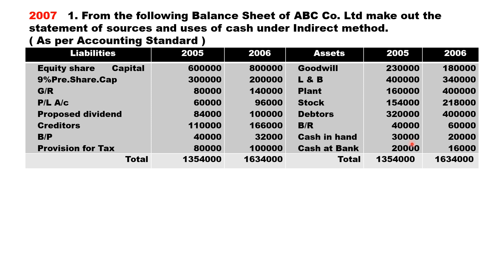Cash and bank will not come into calculations directly — they appear only at the end for finding the final answer. Opening cash and bank together is fifty thousand (thirty plus twenty), and closing cash and bank is thirty-six thousand (twenty plus sixteen).